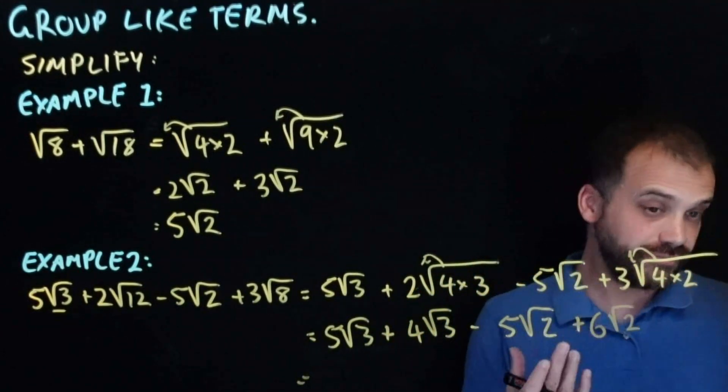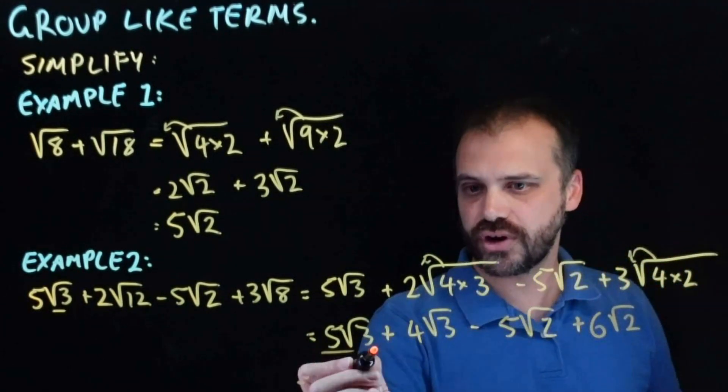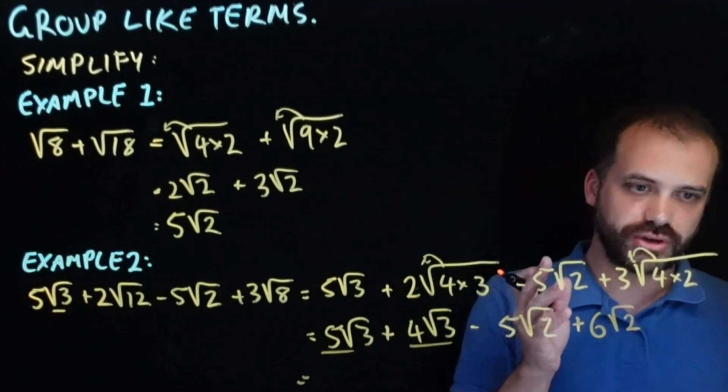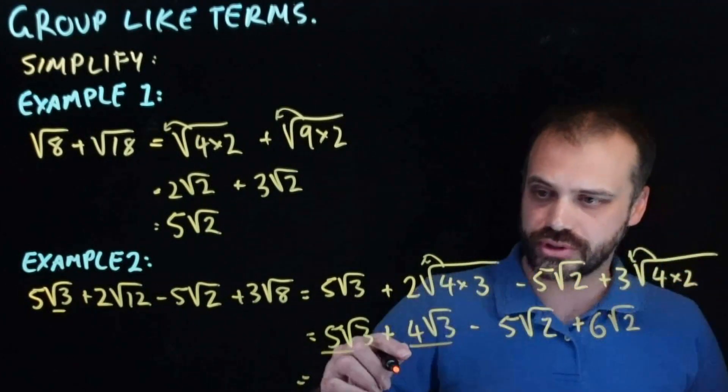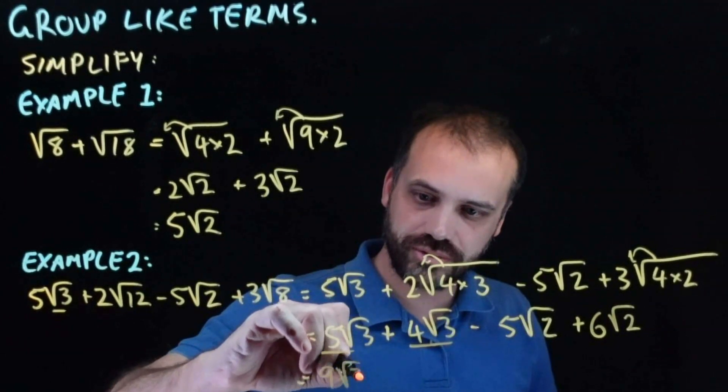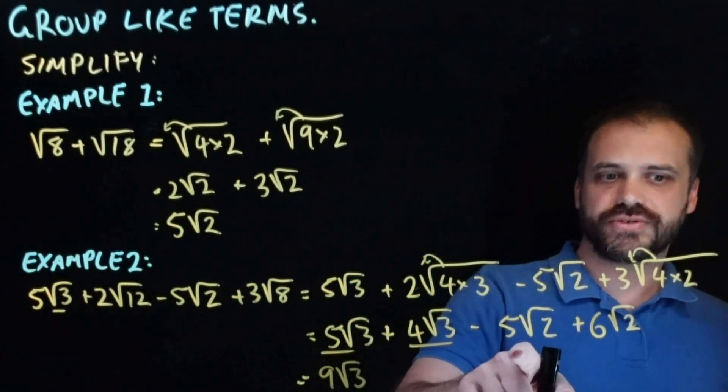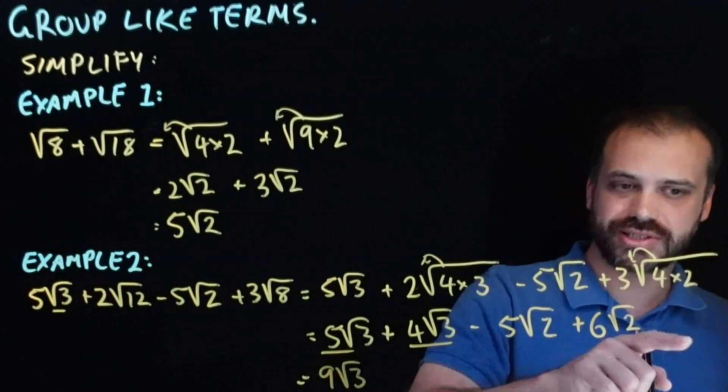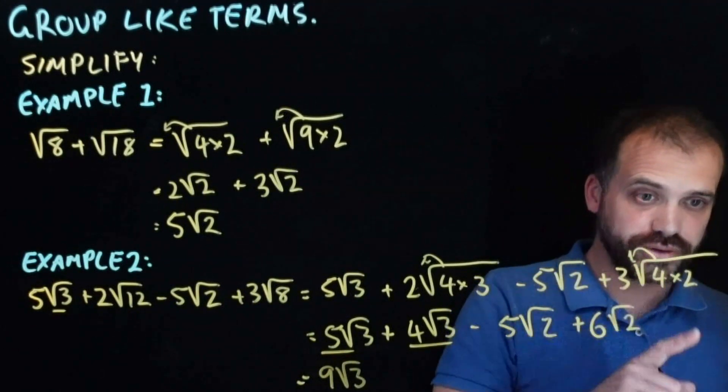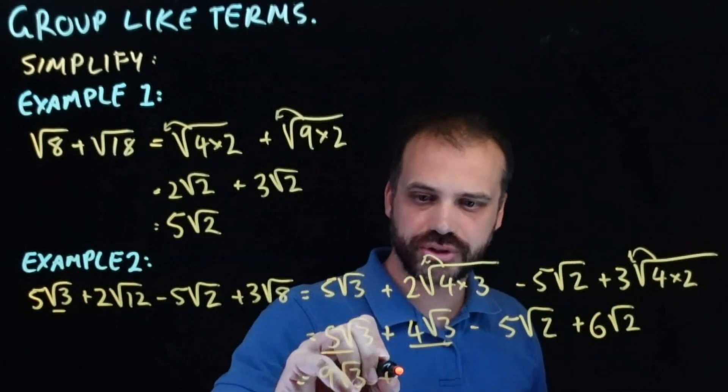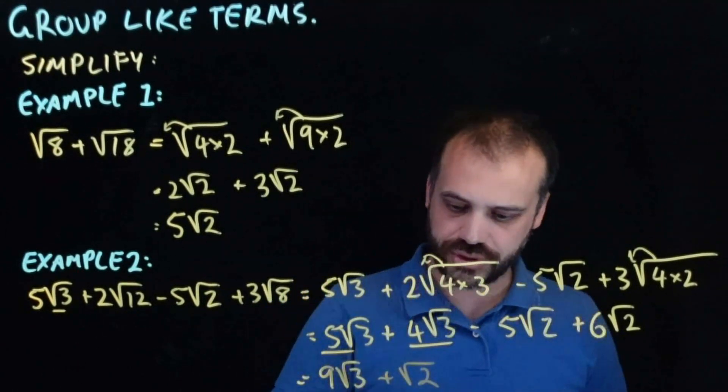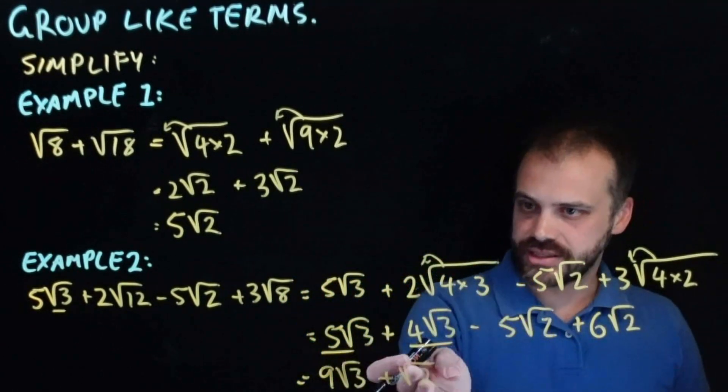And you can see now that in fact I do have some like terms. 5 root 3 and 4 root 3. So 5 root 3s plus 4 root 3s are 9 root 3s. And here I have minus 5 root 2s plus 6 root 2s. That's 1 root 2. We don't write 1 root 2. We just write root 2. There's our final answer.